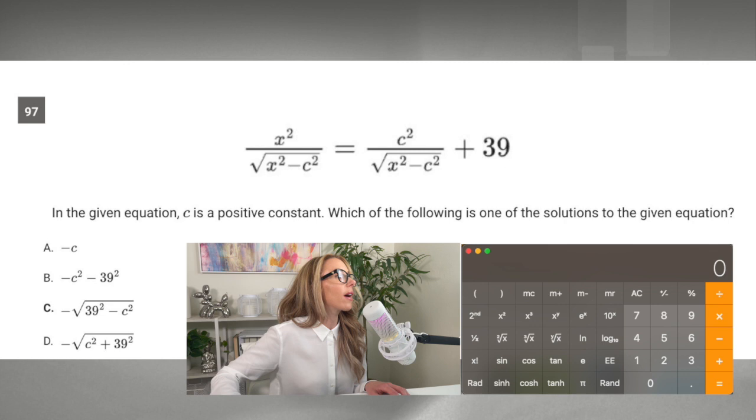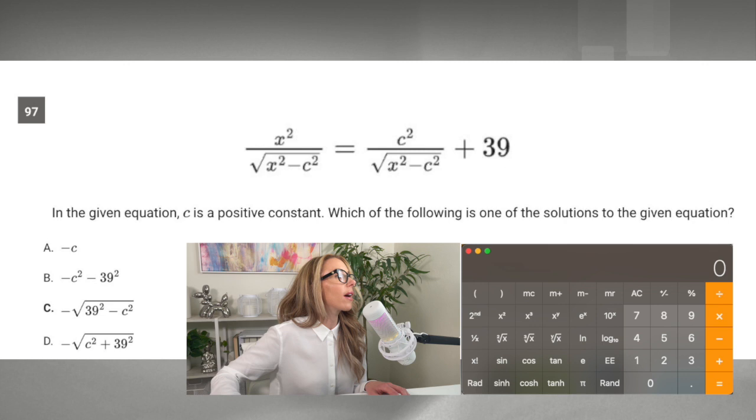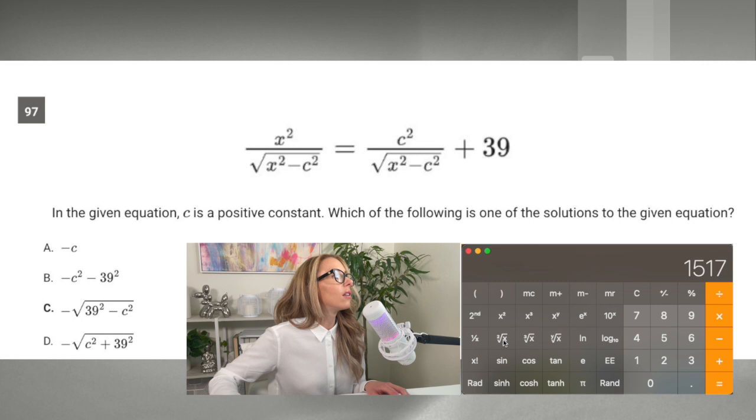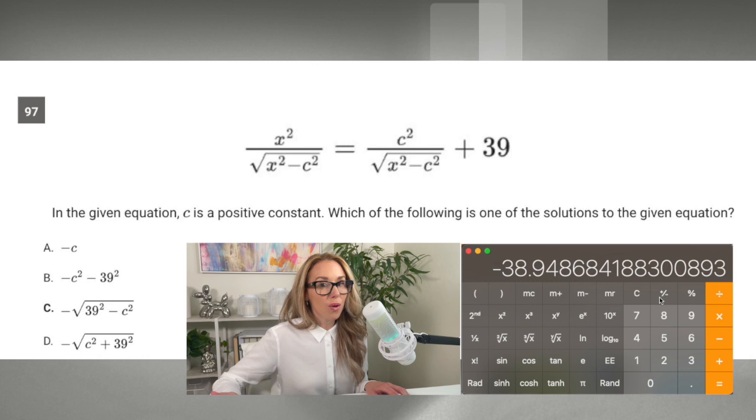Let's go to C and see what that is. I'm going to do 39 squared, then subtract 4 because we're subtracting C-squared, then square root that and make it negative. That is close - it's 38.95 essentially - but we need 39.051.